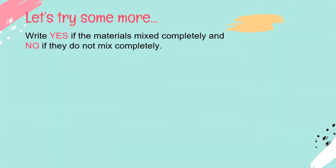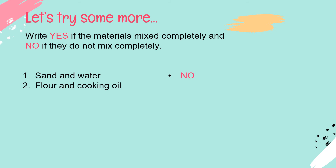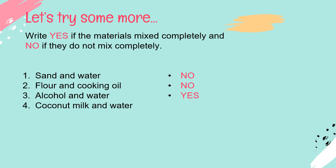Let's try some more. Write yes if the materials mixed completely and no if they didn't mix completely. Number one: Sand and water — the answer is no. Number two: Flour and cooking oil — no. Number three: Alcohol and water — yes. Number four: Coconut milk and water — yes. Number five: Powder juice and water — yes.